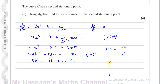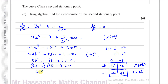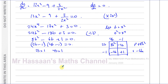Now factorising 8b squared minus 6b plus 1 equals zero: we need two numbers that multiply to give 8b squared and add to give negative 6b — those are minus 4b and minus 2b. Factorising gives (2b minus 1)(4b minus 1) equals zero. So 2b equals 1, giving b equals one half, and 4b equals 1, giving b equals one quarter.